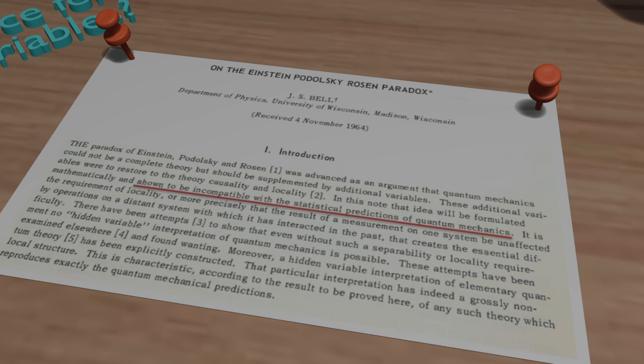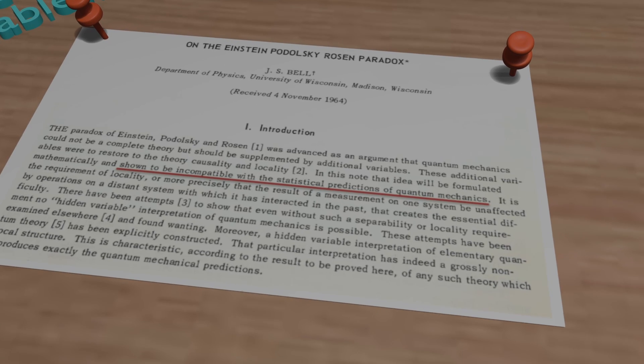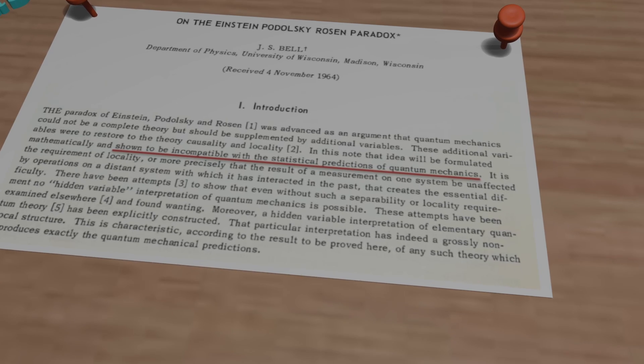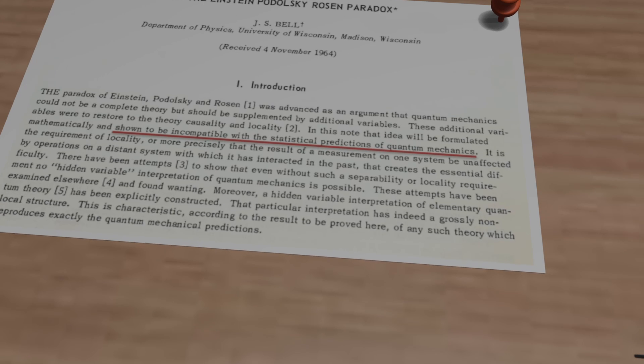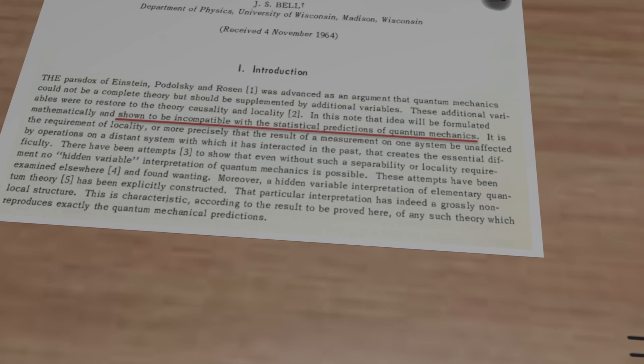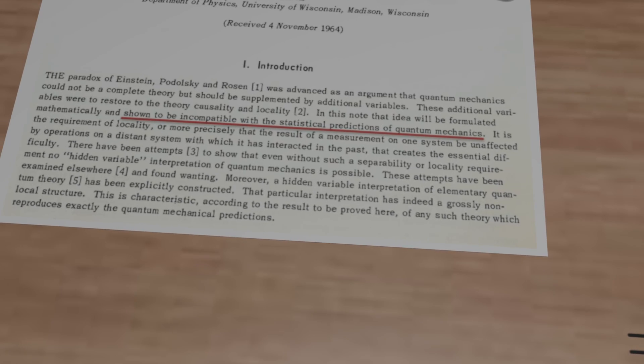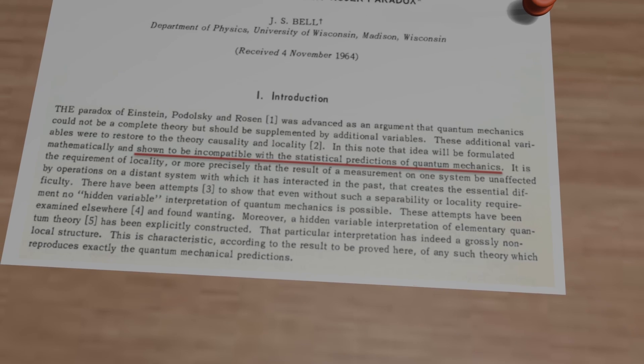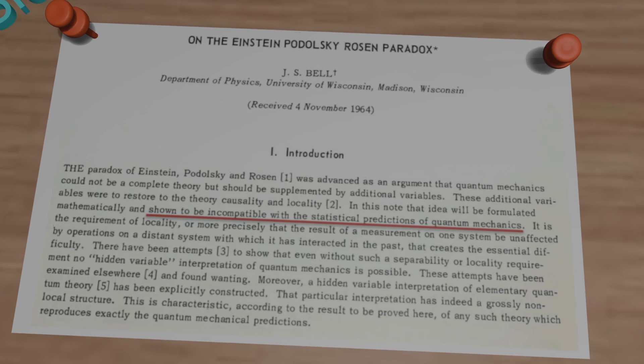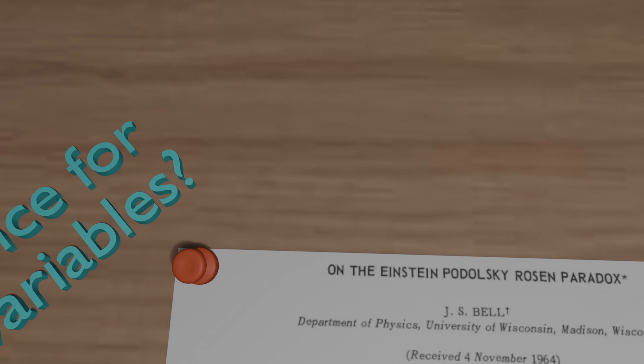In 1964 Bell formulated his groundbreaking theorem, providing a way to experimentally test whether the predictions of quantum mechanics could be explained by local hidden variable theories. His key insight was that if quantum mechanics is correct, the observed entangled particles would violate his inequality.